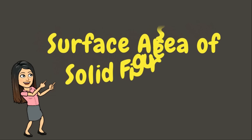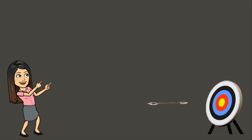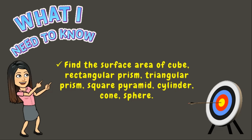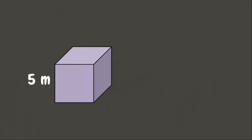Surface area of solid figures. Hi dear students, welcome back to my classroom. For today's lesson, you are going to learn how to find the surface area of some solid figures like cube, rectangular prism, triangular prism, square pyramid, cylinder, cone, and sphere. Let us begin. Let's have our first example — we have here a cube whose side measures five meters.